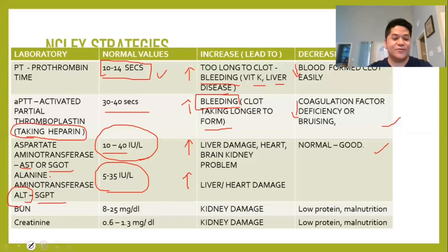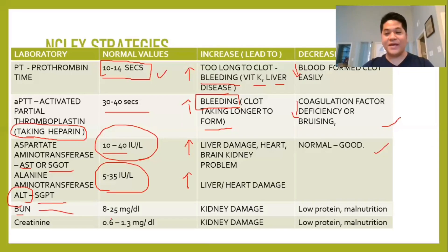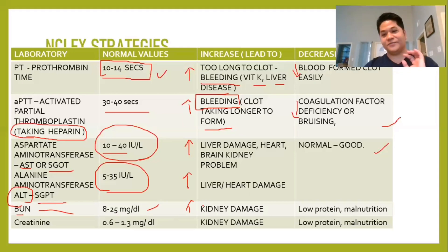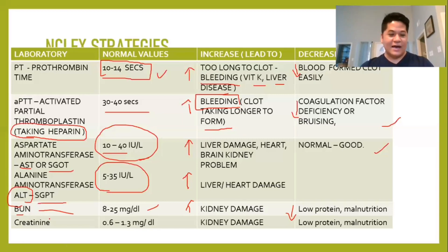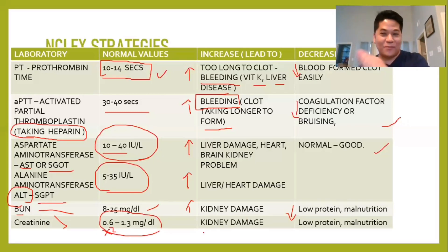Moving on to BUN, blood urea nitrogen, and creatinine. BUN is 8 to 25 milligrams per deciliter. An increase indicates kidney damage; it assesses kidney function. A decrease in BUN is due to malnutrition, low protein intake, or muscle wasting. For creatinine, the normal value is 0.6 to 1.3 milligrams per deciliter. Increased creatinine also indicates kidney damage, while a decrease is due to malnutrition and low protein intake.